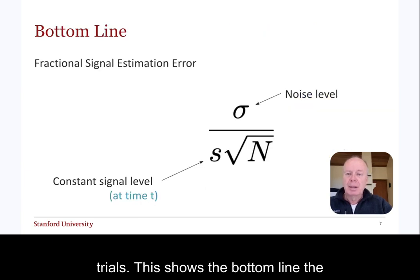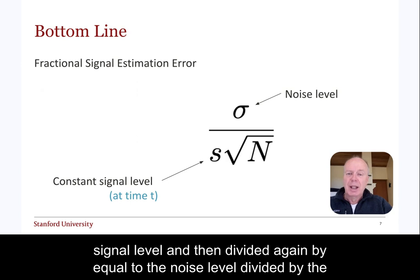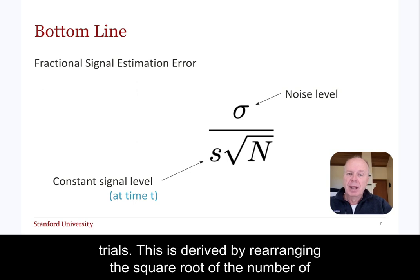This shows the bottom line. The relative signal estimation error is equal to the noise level divided by the signal level, and then divided again by the square root of the number of trials. This is derived by rearranging the equation from two slides ago.